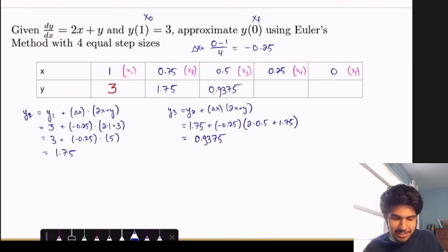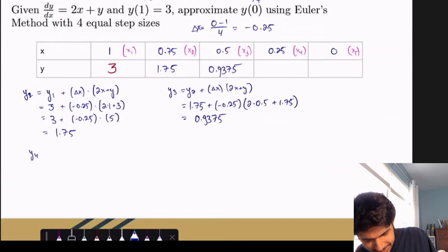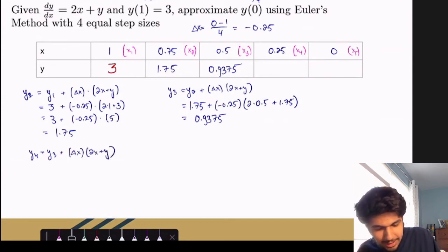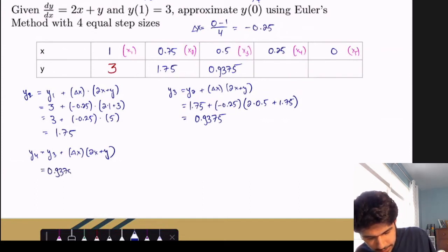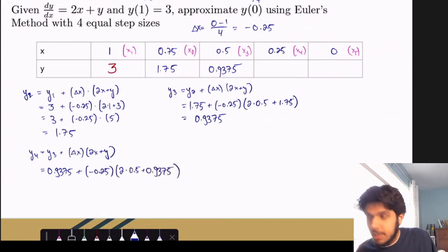And we do it again. So it's a very laborious and tedious process, but it is part of what we have to do. So 2x plus y. And again, this box only relies on the previous box's information. So this would be 0.9375 plus delta x is still 0.25. Here we do 2 times 0.5 plus 0.9375. And that will be equal to 0.453125.